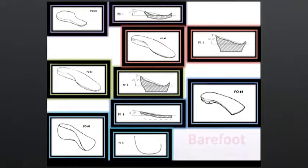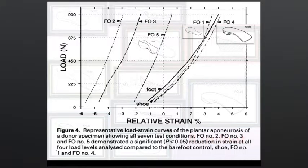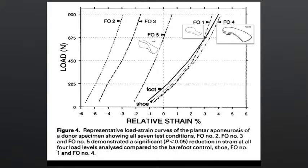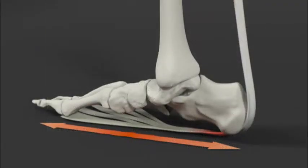Podiatric orthotics, prefabs, barefoot and the shoe alone were identical. The UCBL performed better and raising the arch progressively decreased tension even more dramatically. Restoring functional posture was the answer.